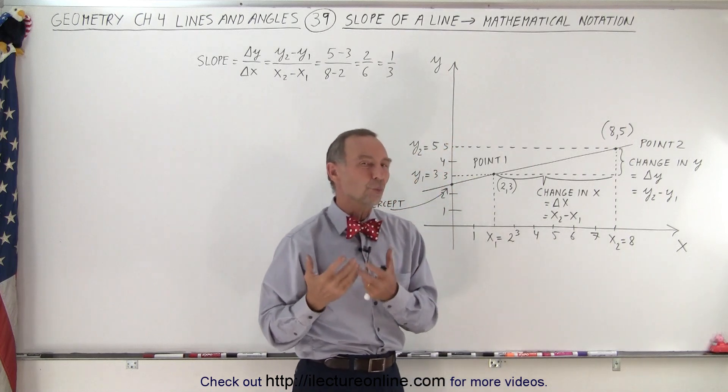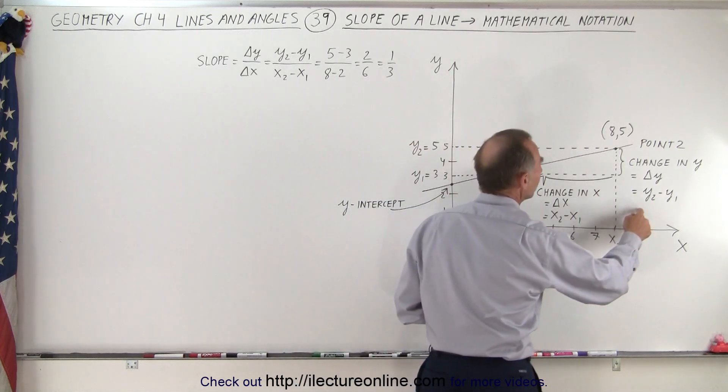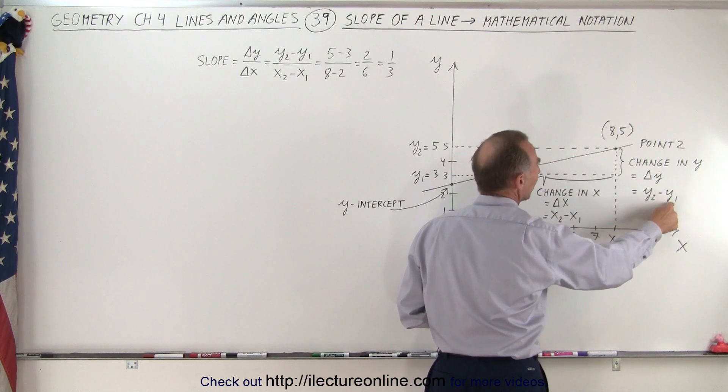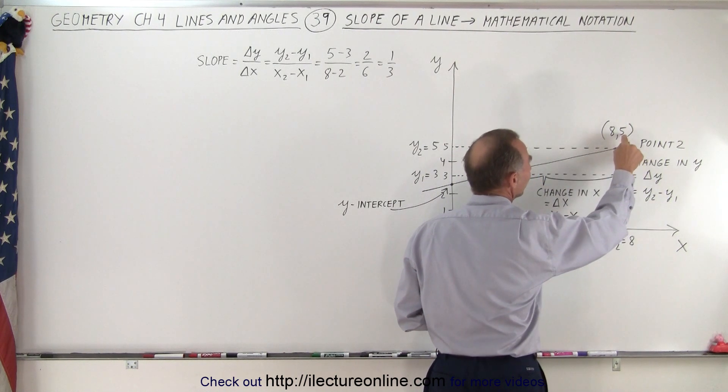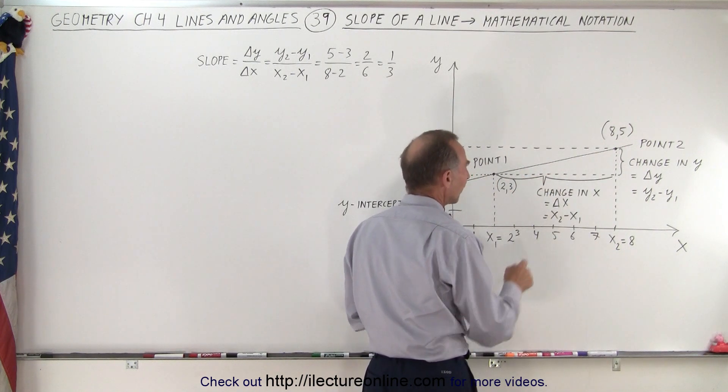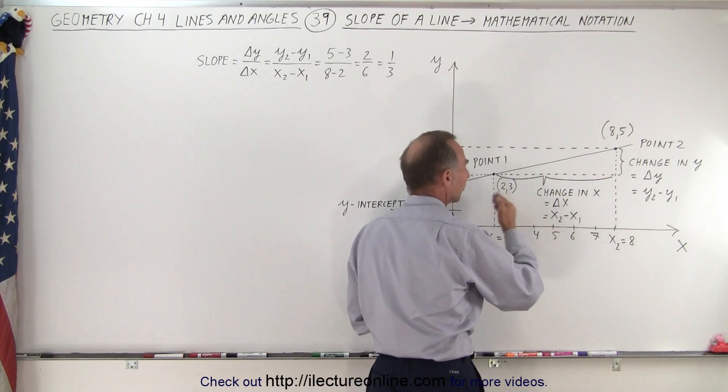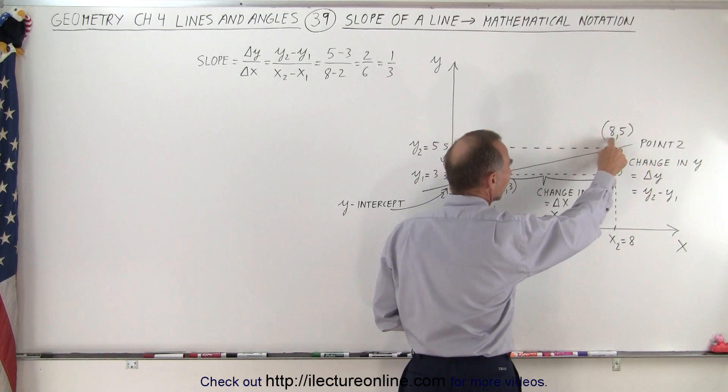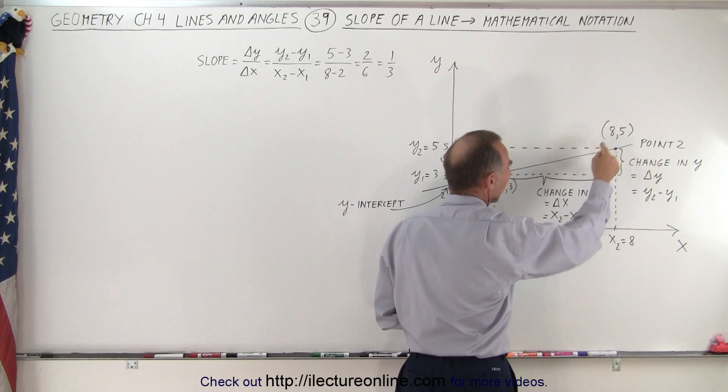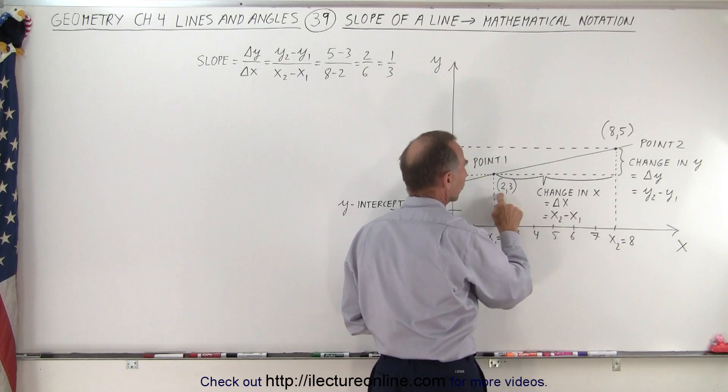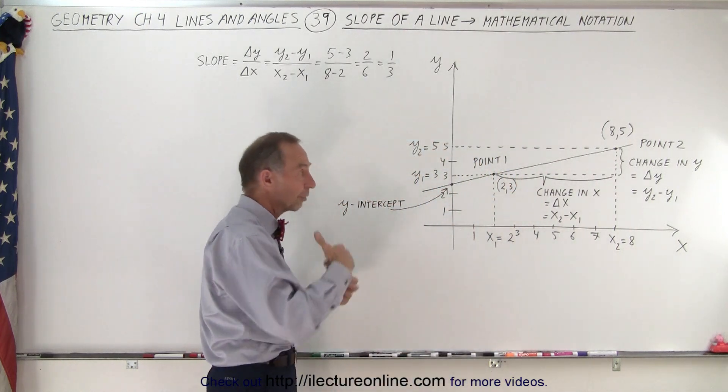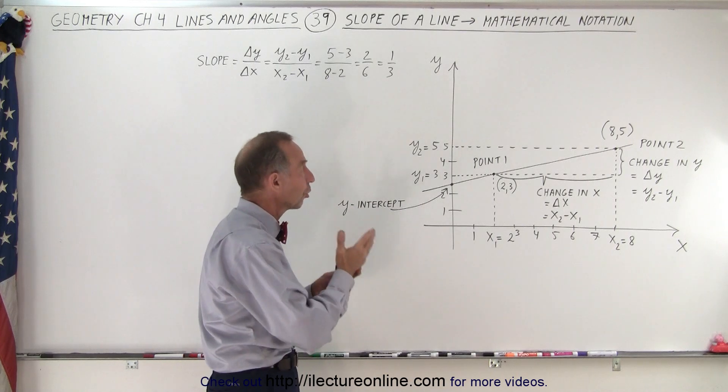To find the change in y, we can take the y-value of the second point and subtract from that the y-value of the first point. So it would be 5 minus 3. To find the horizontal distance traveled from left to right, we take the x-value of the second point, which is 8, and subtract from that the x-value of the first point, which is 2. And so that ratio of those two changes will give us the slope of the line.